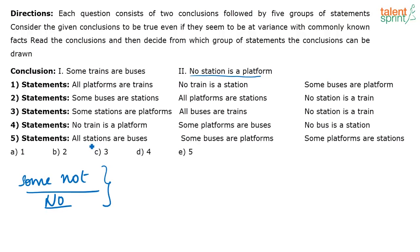What is option 5? All stations are buses, some buses are platforms, some platforms are stations. Here there is no negative statement at all. So using these three given statements, definitely you cannot arrive at this conclusion. So you can eliminate option 5. This is how you eliminate option 5.